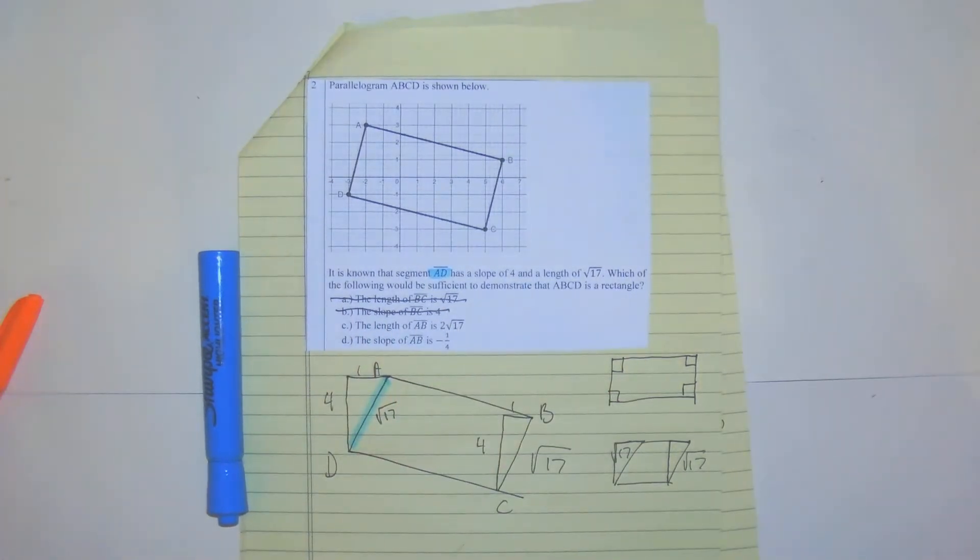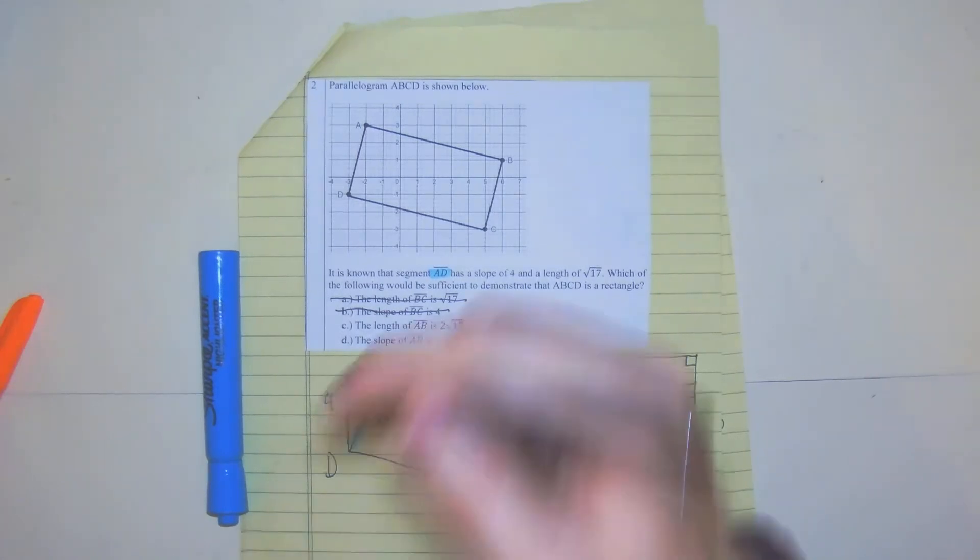The length of AB is 2 square root 17. Well, there's nothing about rectangles where they have to be with the length of it, so that's not there.